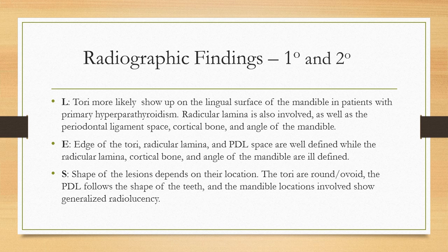S: Shape of the lesions depends on their location. The tori are round and ovoid, the PDL follows the shape of the teeth, and the mandible locations involved show generalized radiolucency.